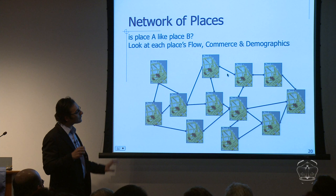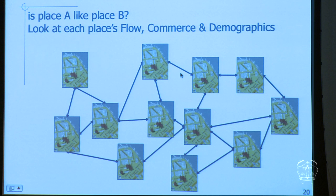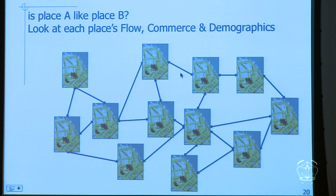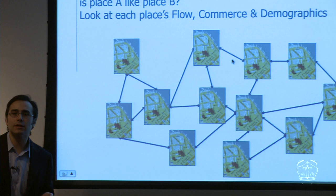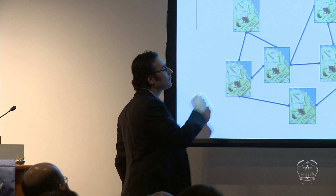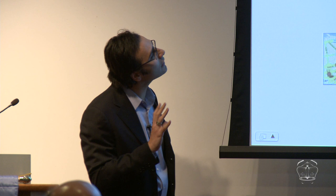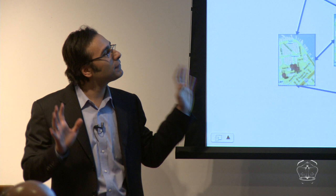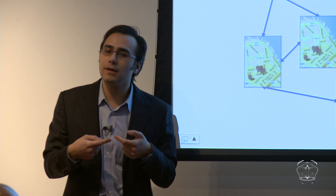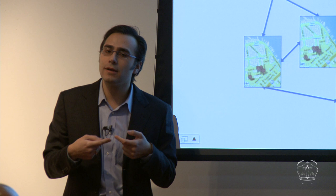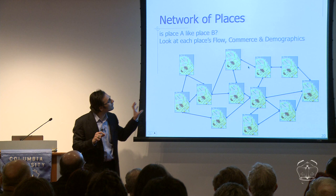What does a network of places look like? It's a little like the network of websites on the Internet — places that are similar should link to each other. When you go to a professor's website, they'll link to other professors; a lawyer's website links to colleagues working on similar cases. Websites link to each other if they're doing similar things, and places should be linked together if they have similar activity. We're going to describe this network of places by looking at the flow of people in and out — a bit like how Google modeled the Internet by looking at how people move around and using that to calculate PageRank.